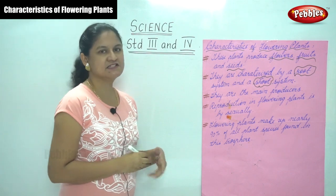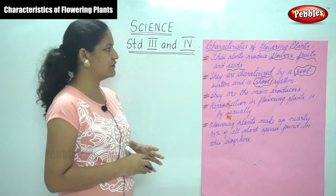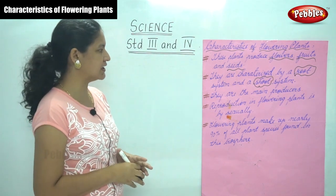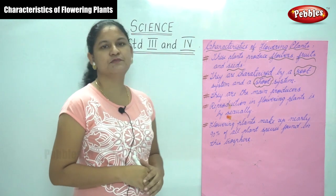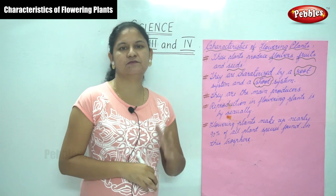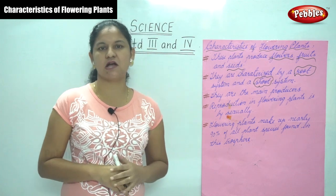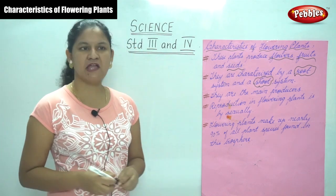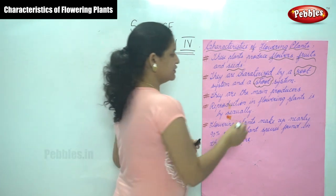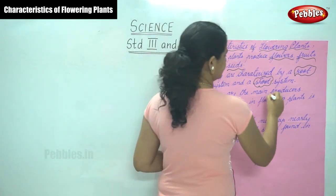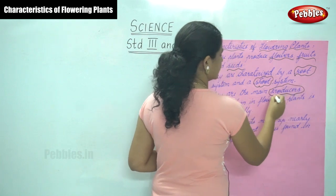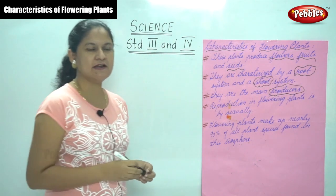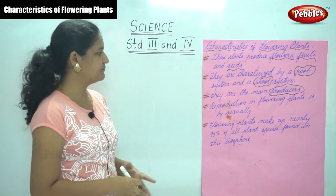The next characteristic of a flowering plant is that they are the main producers. The flowering plants produce all the flowers, fruits, and leaves.